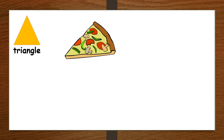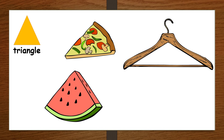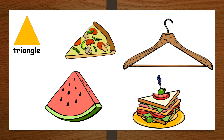What other thing is a triangle? A slice of watermelon. The watermelon is a triangle. This is a hanger. The hanger is a triangle. This is a sandwich. The sandwich is also a triangle.